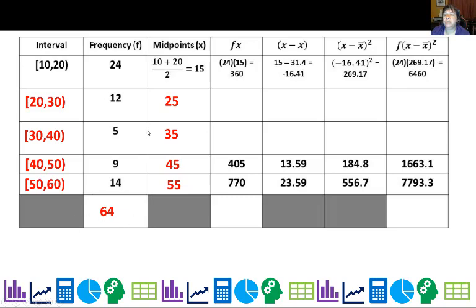I can't go 24 times 10 or 24 times 20, so I'm going to use the midpoint of the interval. Instead of 10 or 20, we'll use 15. Instead of 20 and 30, we'll use 25 and 35 and 45 and 55. I'll do 12 times 25, five times 35, and add these all up. To find the mean age, I take this product and divide it by 64. I get the average age was 31.4.